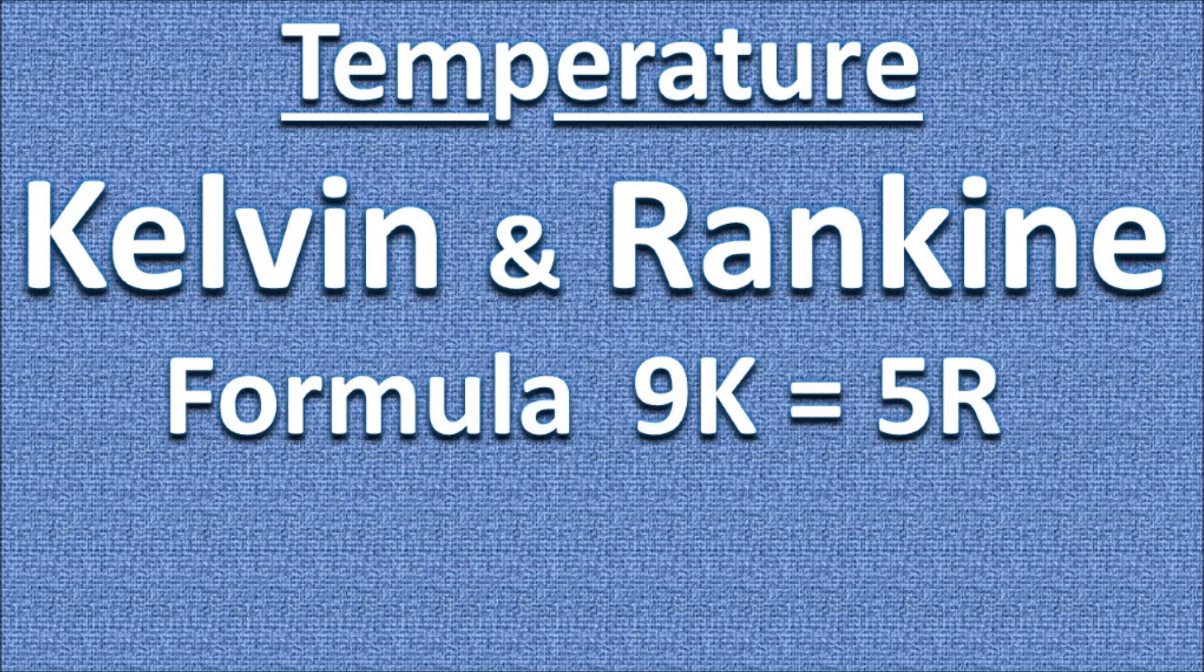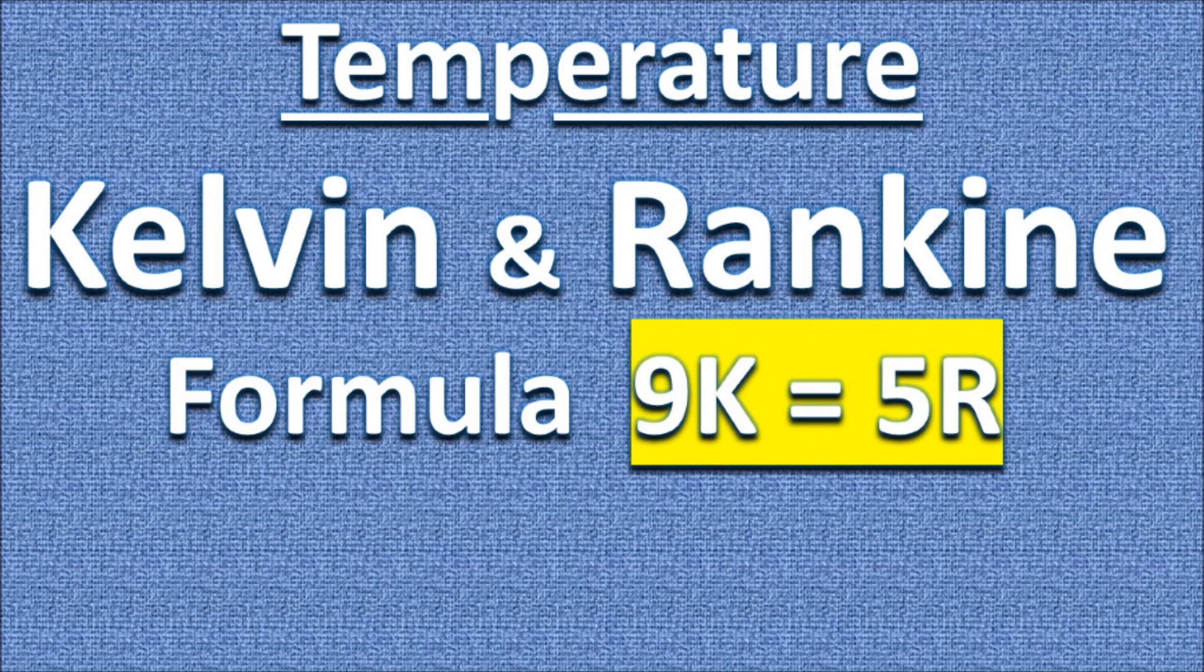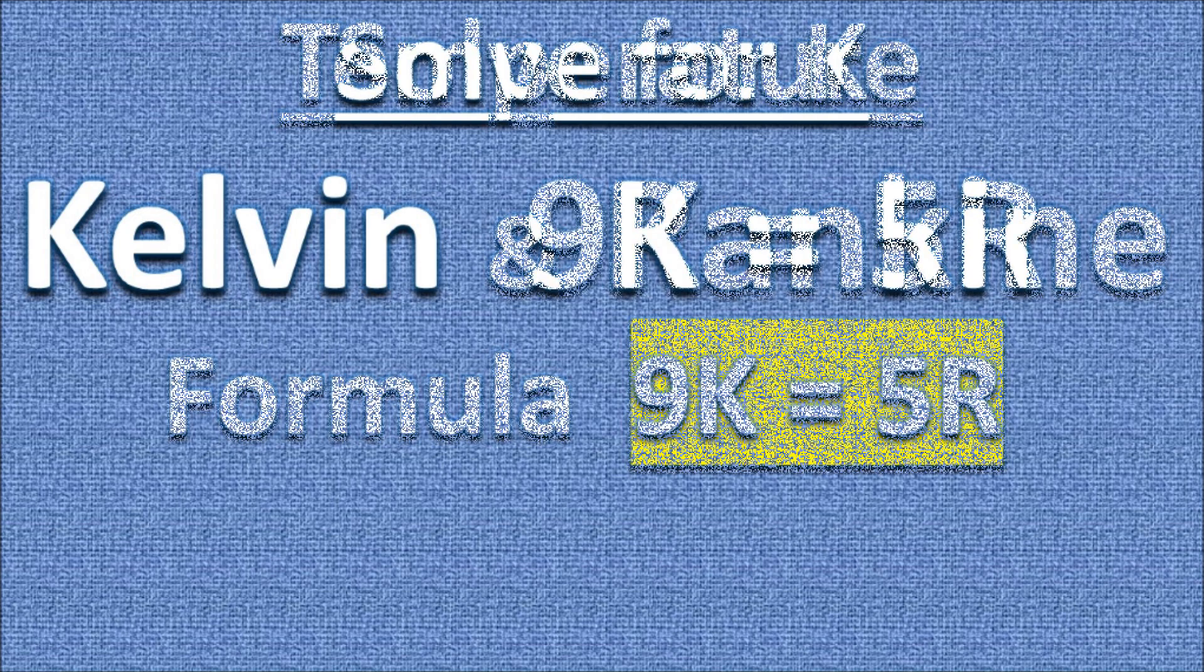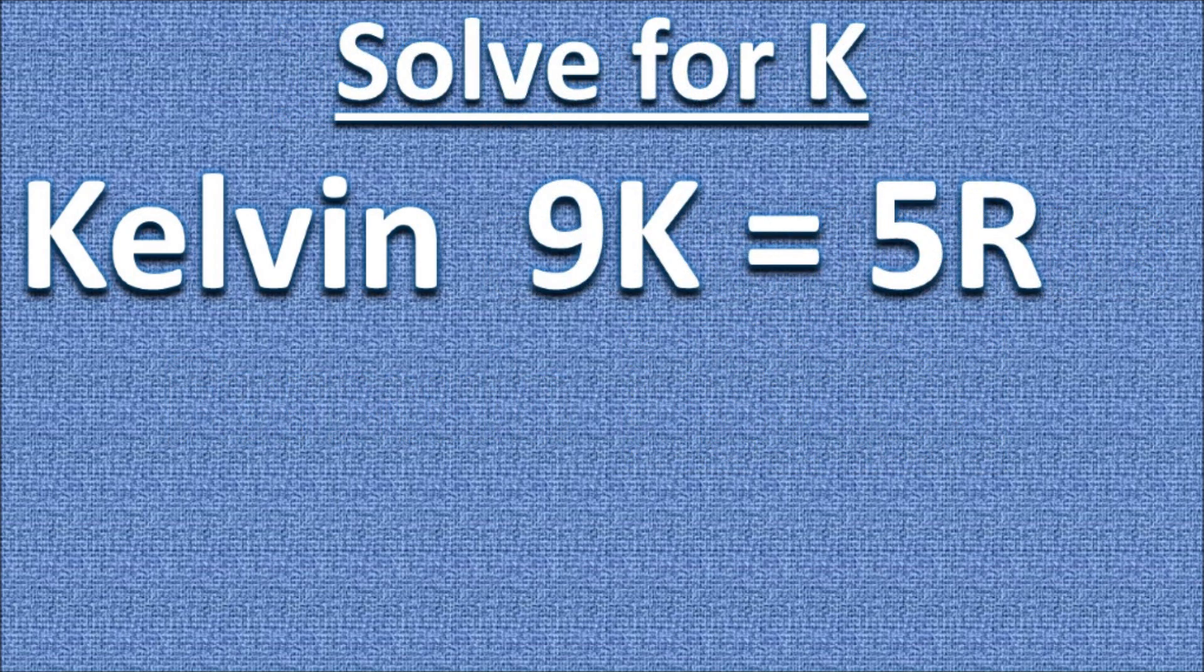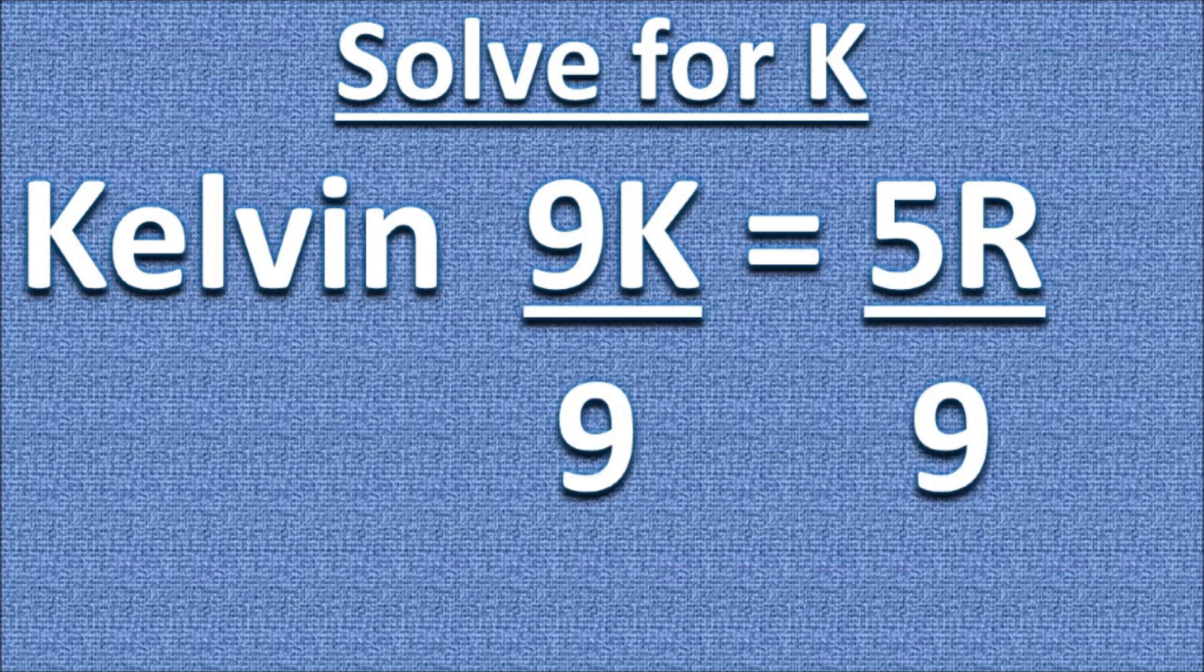Here's our conversion formula. My professor calls it the K9 formula. Let us begin solving for K, which is for Kelvin. We divide by 9 on both sides of the equation to get K by itself. The 9's cancel out on the left side of the equation.